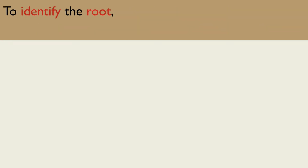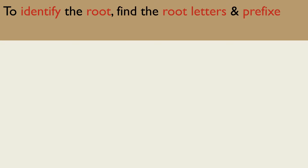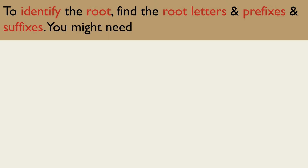To identify the root, look carefully at the letters in the verb to work out which letters are part of the root and which are prefixes and suffixes. More than half of the letters in the Hebrew alphabet cannot be prefixes or suffixes and so must always be root letters. Once you have identified which letters are root letters, you might need to add one or occasionally even two missing letters to complete the root.